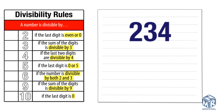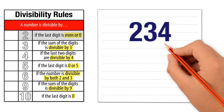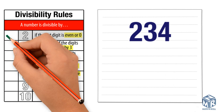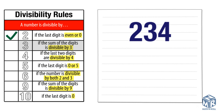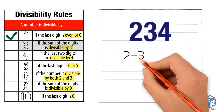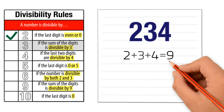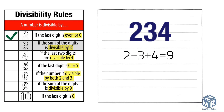Let's look at 234 and figure out which numbers it is divisible by. Let's check if it's divisible by 2: the last digit is even, so it is divisible by 2. Let's check if it's divisible by 3: the sum of the digits is 9, and 9 is divisible by 3, so 234 is divisible by 3. Let's check if it's divisible by 4: the last two digits are 34, and 34 is not divisible by 4 without a remainder, so 234 is not divisible by 4.